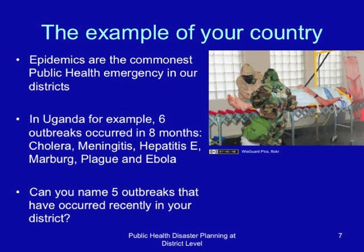As an example from your country, epidemics are the commonest public health emergency in districts across the East African region. In Uganda, for example, six outbreaks occurred in eight months in 2007, and these included cholera, meningitis, hepatitis E, Mabag, plague, and Ebola. Can you name five outbreaks that have occurred recently in your district?